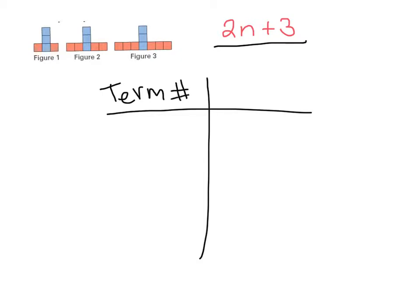Term number simply means what number is my figure in the pattern, and term value means how many total blocks do I have. So for example, in figure one I have five total blocks, in figure two I've got seven total blocks, and in figure three I've got nine total blocks.